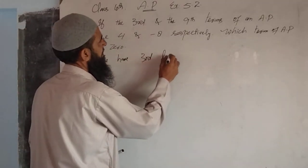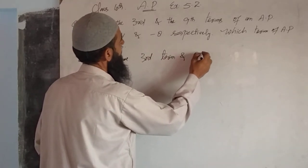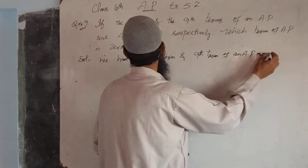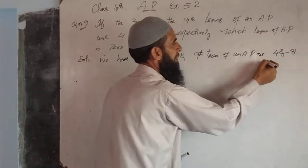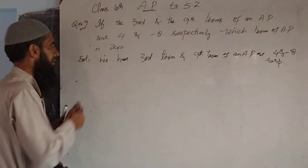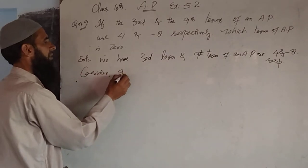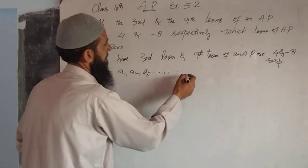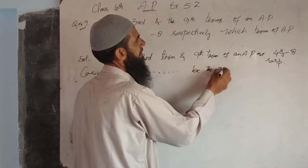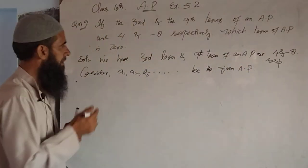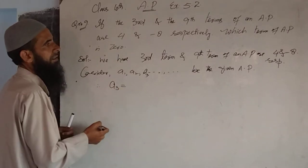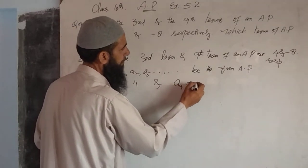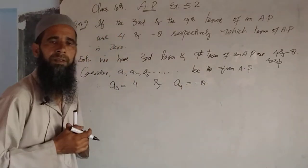We are given that the 3rd term and 9th term of an AP are 4 and minus 8 respectively. So a3 is equal to 4, and a9 is equal to minus 8. We have to find which term of the arithmetic progression is zero.